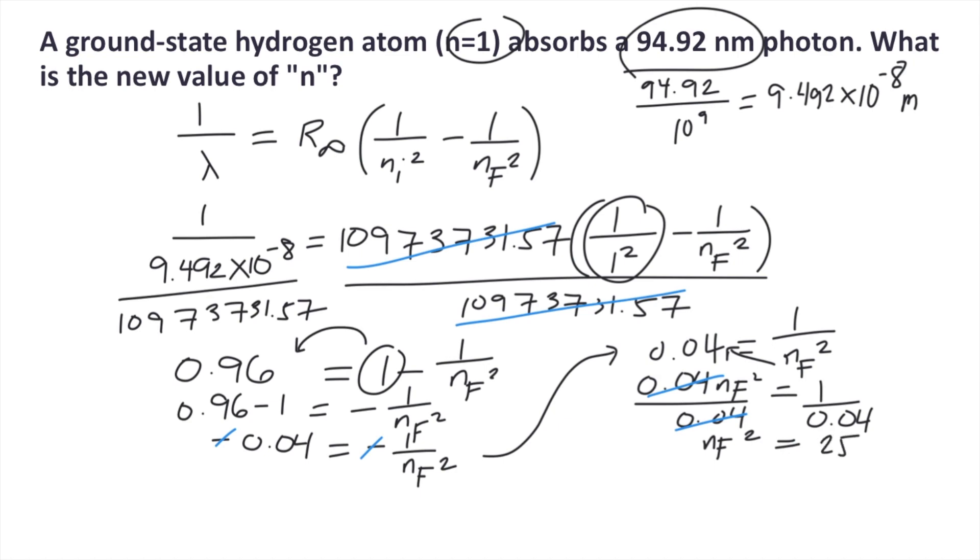How do we get nf? Take the square root of both sides. Square root of nf squared is just nf. Square root of 25 is 5. So the final value of n, or the new value of n according to the problem, is 5. The answer is 5.